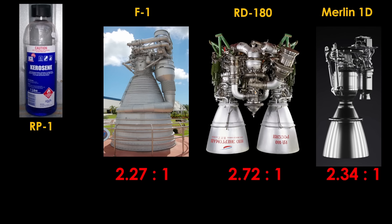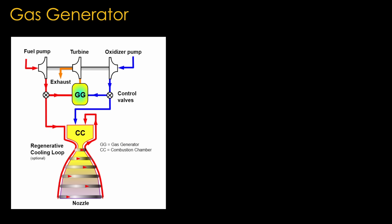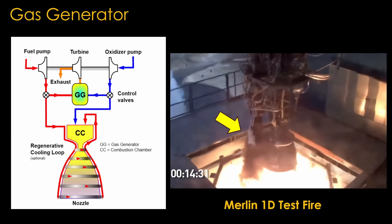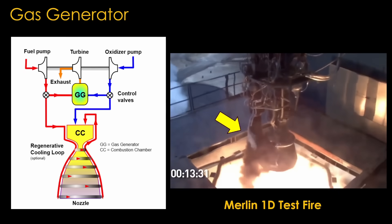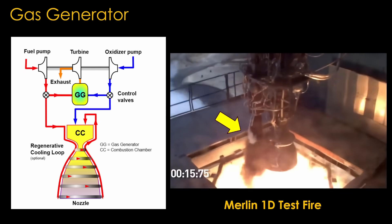I deliberately picked these engines because both the F1 and the Merlin 1D are gas generator engines. There's a separate combustion chamber that generates gas to drive the turbines that power the propellant turbopumps. Turbine wheels get melty if the gas driving them is too hot, so you need a cooler, quite fuel-rich combustion to keep the temperature down. That drives the overall mixture ratio of the engine down. Watching a test of the Merlin 1D, you can see the very smoky exhaust from the gas generator.